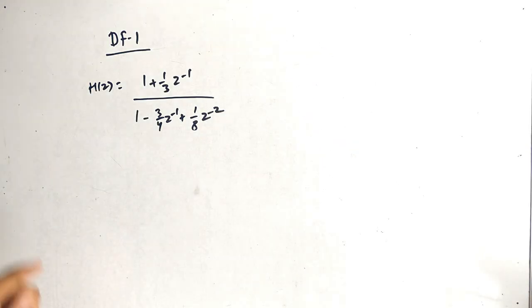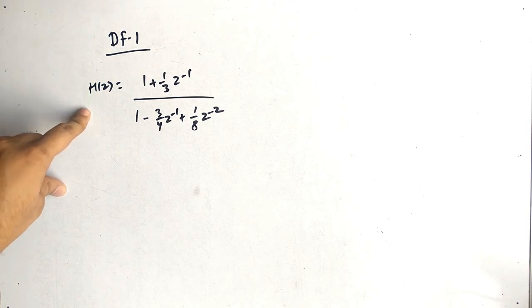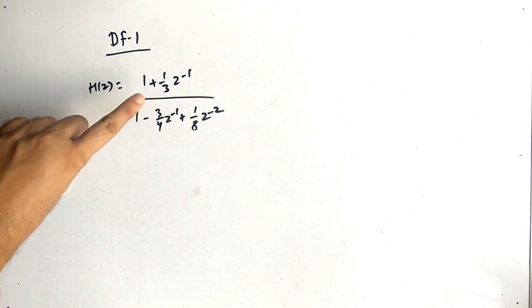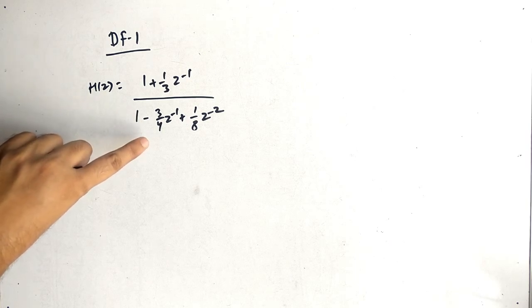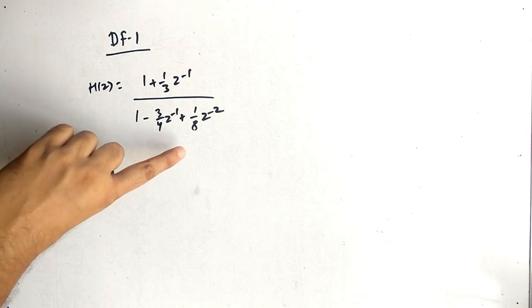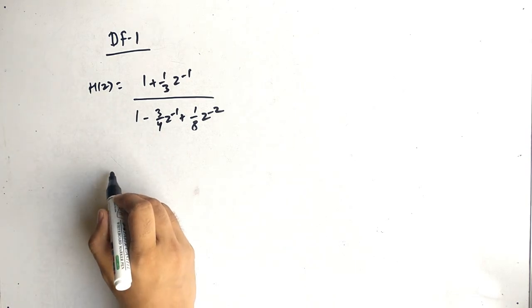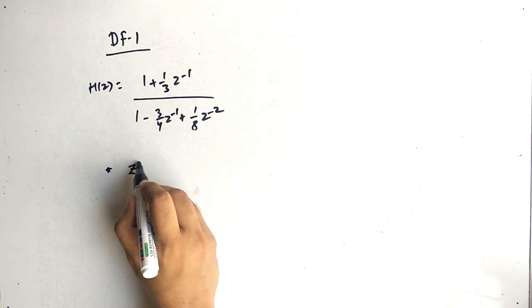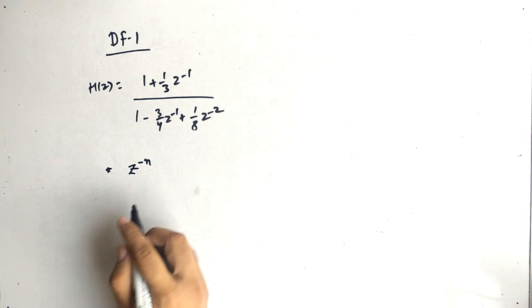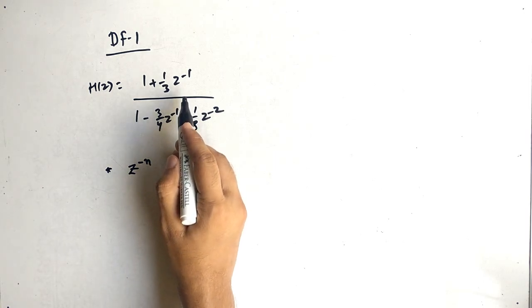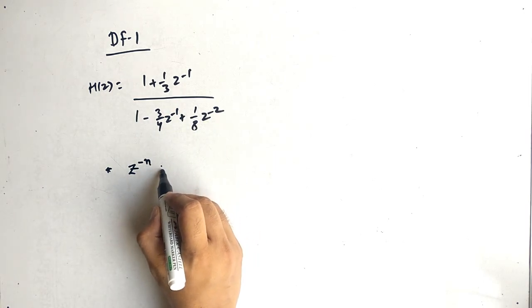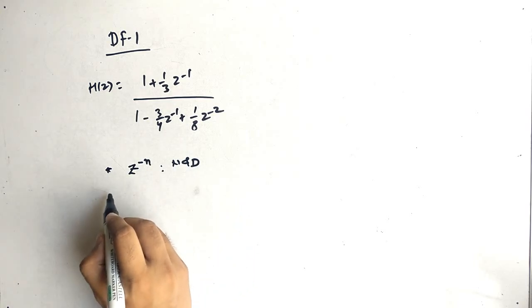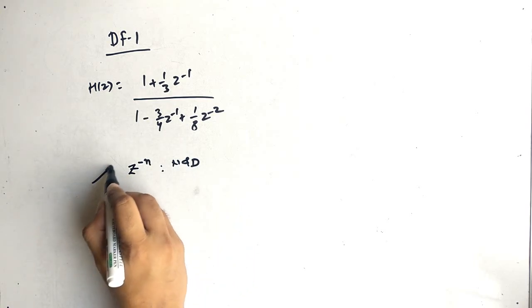Our first question is direct form 1, and H of Z is given. H of Z is (1 + (1/3)z⁻¹) / (1 - (3/4)z⁻¹ + (1/8)z⁻²). The important point you should note is that z should be in terms of negative powers, either z⁻¹ or z⁻² in numerator and denominator.